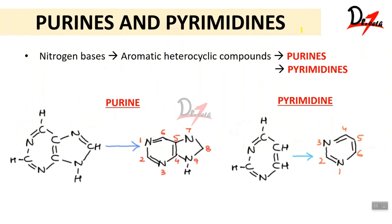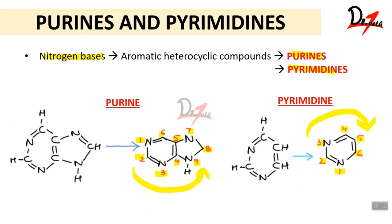Now let's talk about purines and pyrimidines — these are the nitrogen bases. Among the nitrogenous bases that form nucleotides, there are two main categories: purines and pyrimidines. These are aromatic heterocyclic compounds. One important distinction: purines are numbered in the anti-clockwise direction — 1, 2, 3, 4, 5, 6, 7, 8, 9 — while pyrimidines are numbered in the clockwise direction — 1, 2, 3, 4, 5, 6.